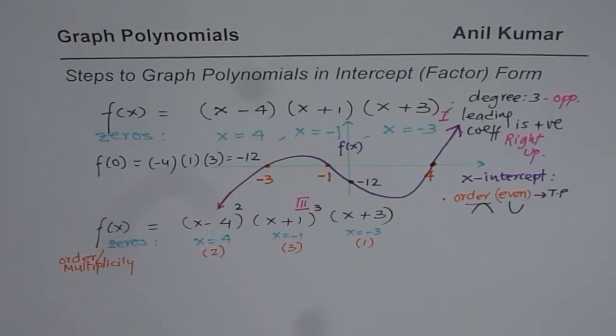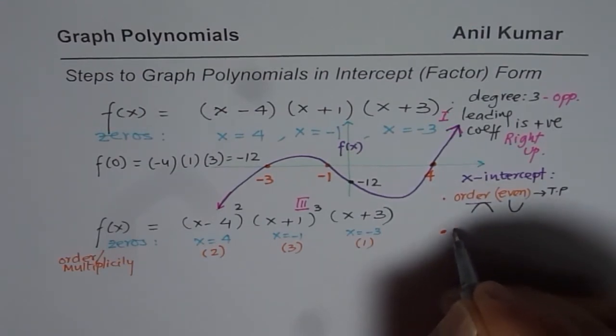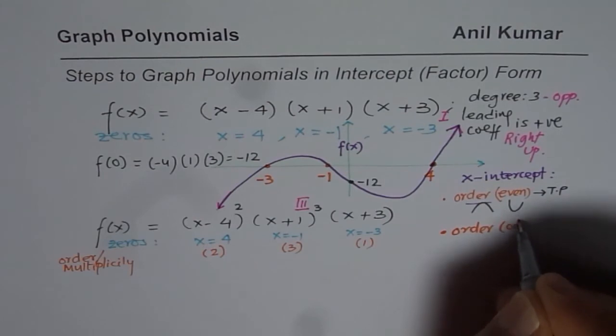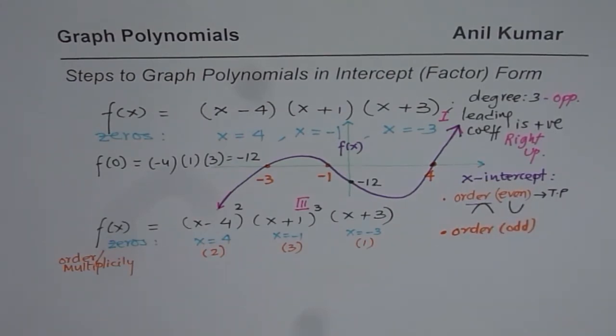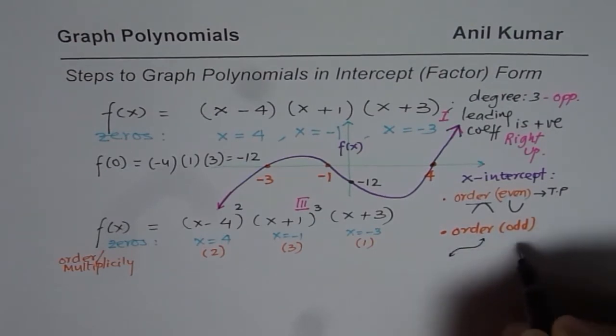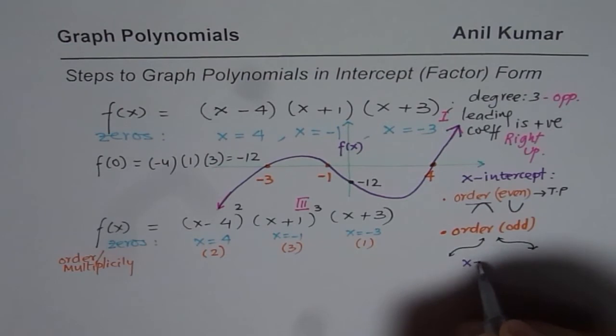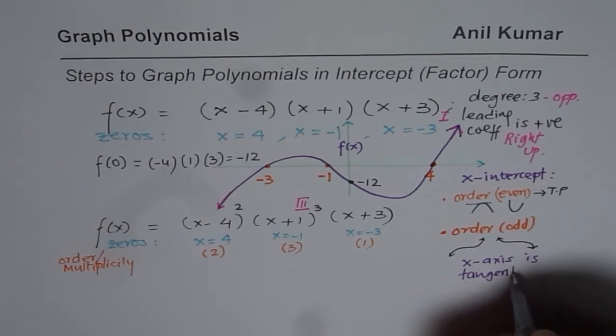The second case is when the order is odd. So it could be 3, 5, whatever, or when order is odd number like 3. Then what happens? In that case, the graph actually goes in a manner like this. It could be like this or if it coming from that other side like this. Do you see that? So x axis is a tangent. So in both cases, we see that x axis is tangent to the graph. However, there is one difference.